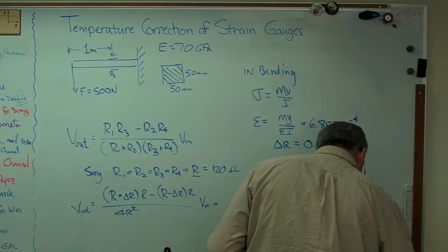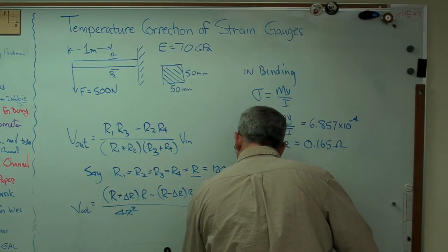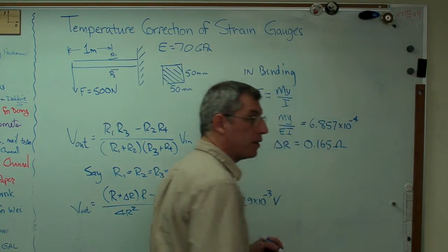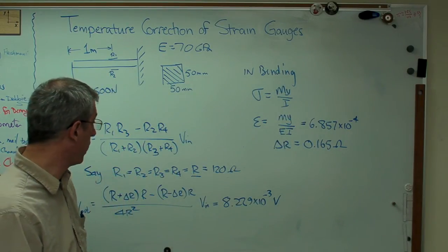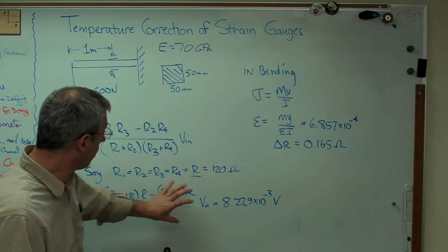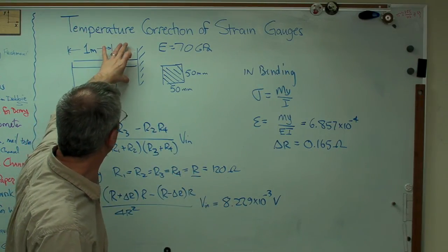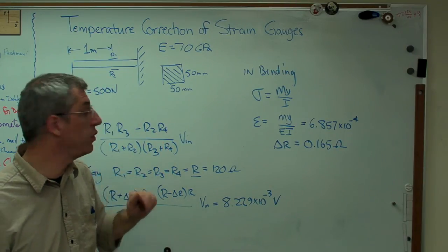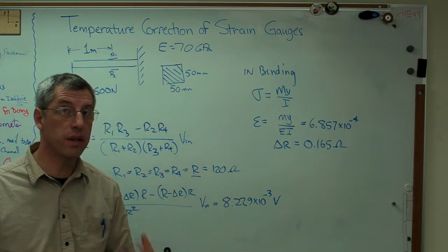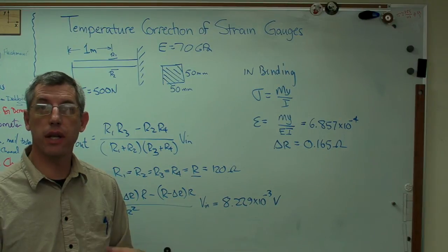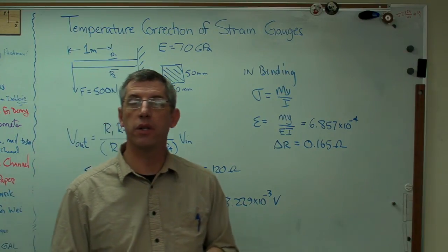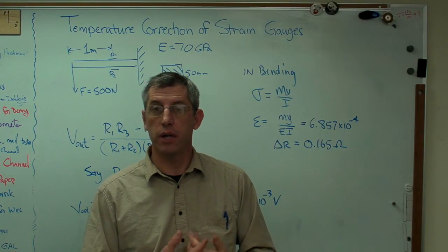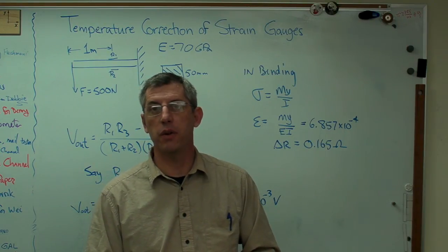When you work this out, you're going to get a voltage of 8.229 times 10 to the minus 3 volts. A small number, but not zero. So work with this gauge setup is sensitive to bending. It's not sensitive to elongations, which means it's not sensitive to temperature changes either. And there are other geometries you can use, other ways of wiring this Wheatstone bridge. If you guys want, I'd be more than happy to talk about those too.